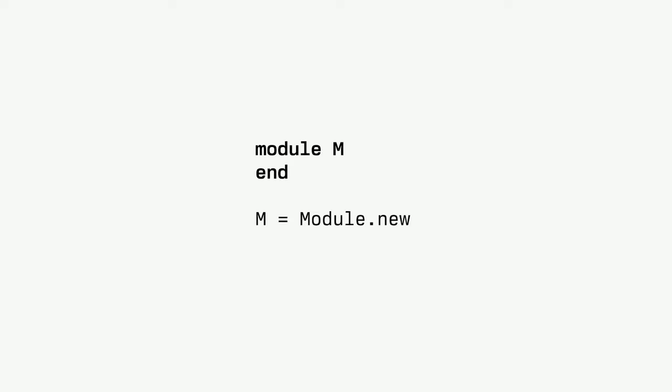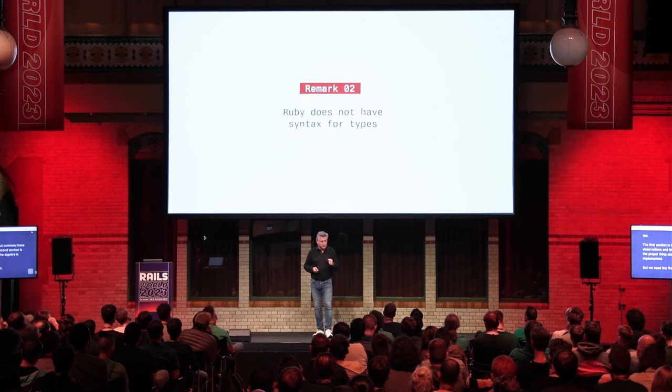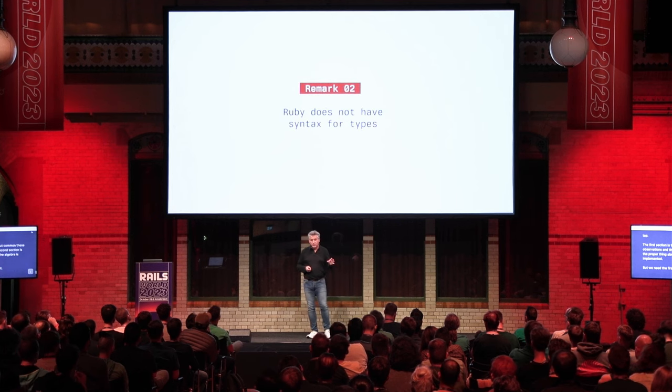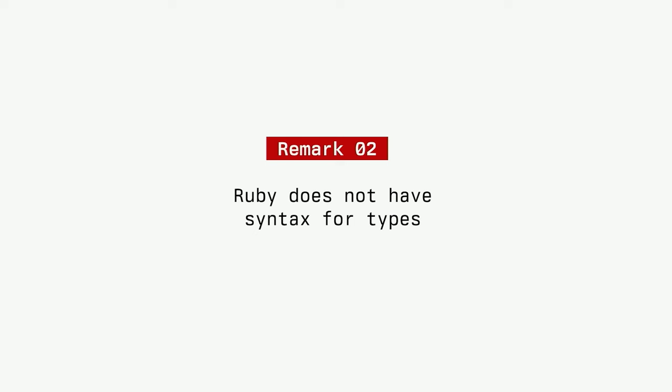That is what happens behind the scenes with the class keyword. Same for modules: if we define a module called M, that's the same as creating a module object and assigning it to the M constant. This links to the second remark: Ruby does not have syntax for types.